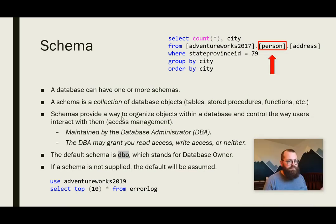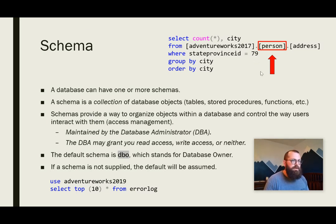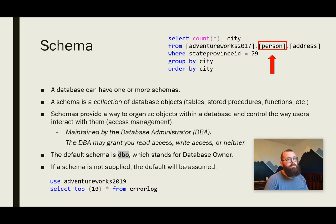Back to the PowerPoint — let's talk about schemas. A database can have one or more schemas. In this code example in the top right, 'person' is the name of the schema in which the address table is located. A schema is a collection of database objects — it doesn't have to be just tables, but can also include stored procedures, functions, etc. Schemas ultimately provide a way to organize objects within a database.